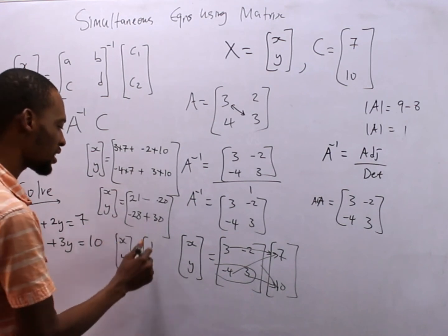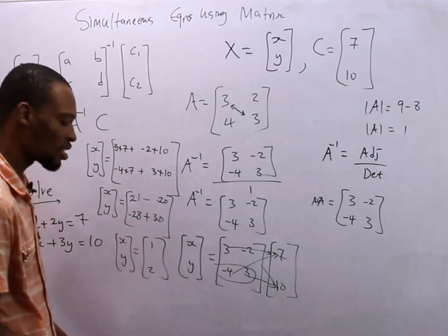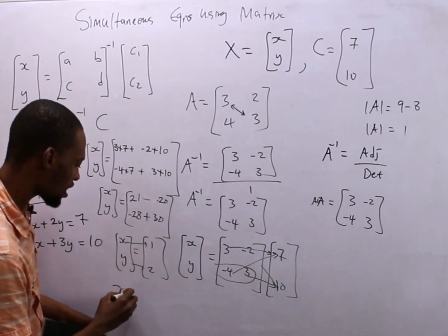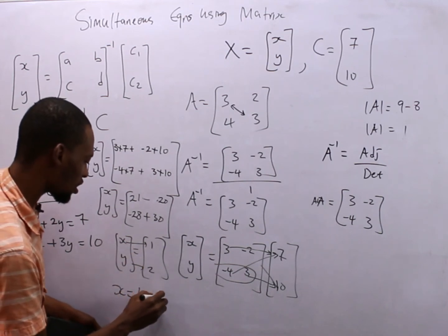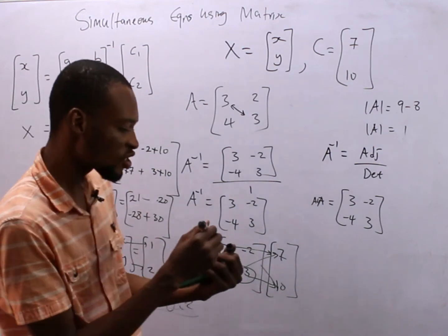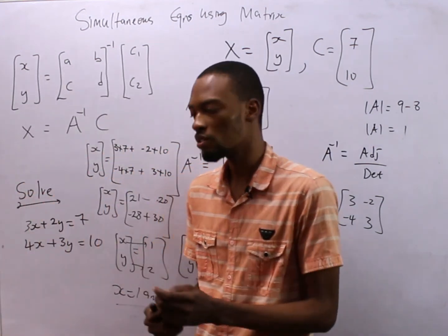You see our answer is ready. This is this and this is this. X is equals 1 and y is equals 2. If you have solved it directly using substitution or elimination method, you would have gotten the same answer.